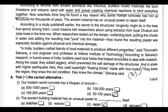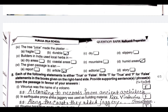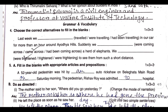Along the coast, they added jaggery, which prevented salt damage to the structure. In areas with higher earthquake risk, they used super-light floating bricks made with rice husk.